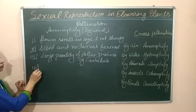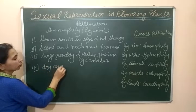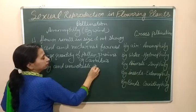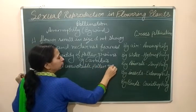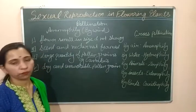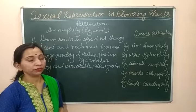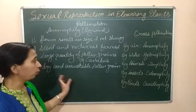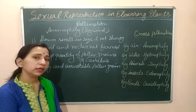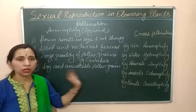The fourth characteristic is that pollen grains are dry and unwettable. The pollen grains formed in such flowers do not get wet by water or any other substance. If they got wet they would become heavy and settle down, and would not be able to fly with the air. So they remain dry and unwettable so they can easily fly with the wind.